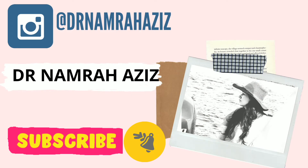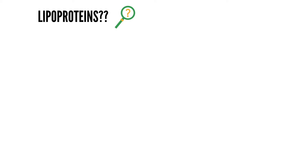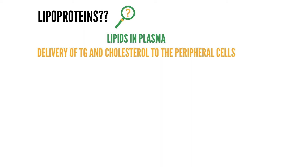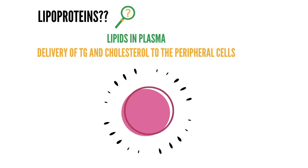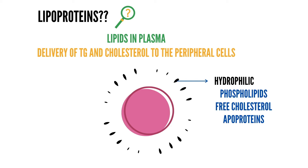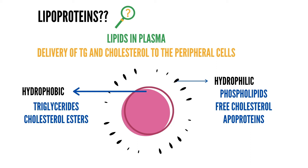An important question is: what is a lipoprotein? The majority of lipids in the plasma are in the form of a complex structure called lipoproteins. The basic structure allows delivery of triglycerides and cholesterol to peripheral cells for their metabolic needs. The outer shell is hydrophilic, composed of phospholipids, free cholesterol, and non-covalently linked specialized proteins known as apoproteins. The inner core is hydrophobic, composed of triglycerides and cholesterol esters.